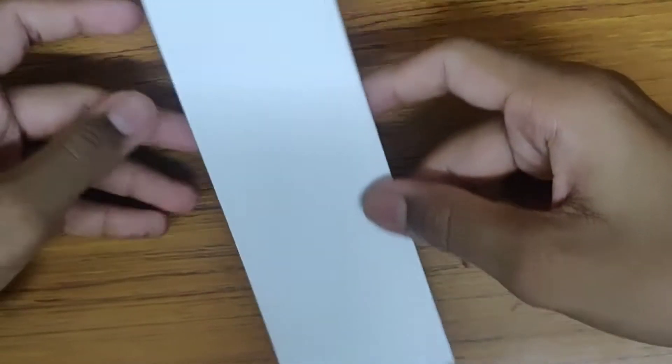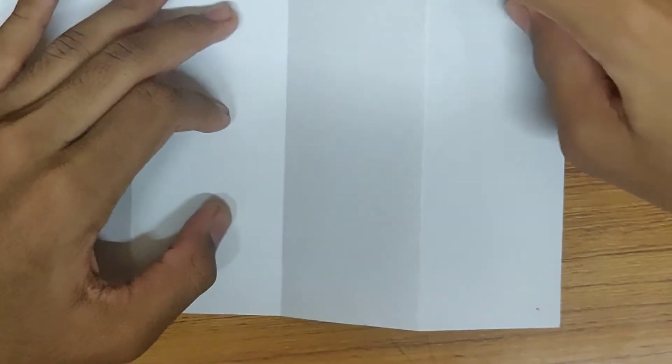Now just slowly unfold it. Now we have four rectangles and two flaps like two mountains.